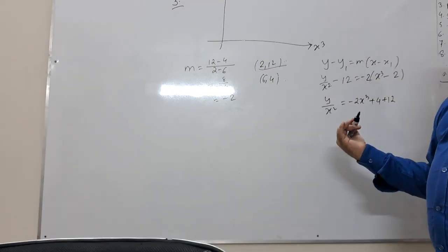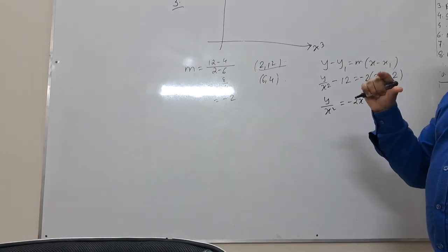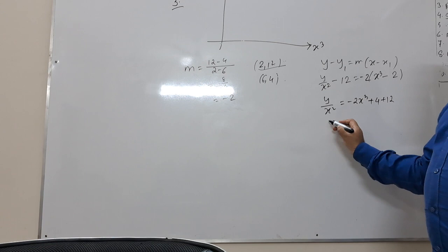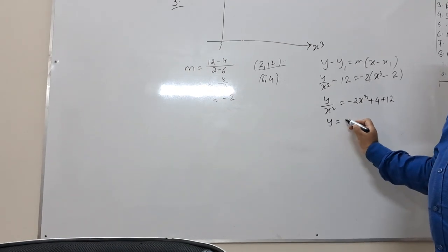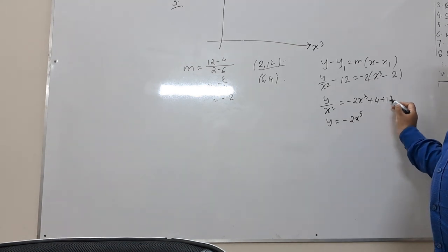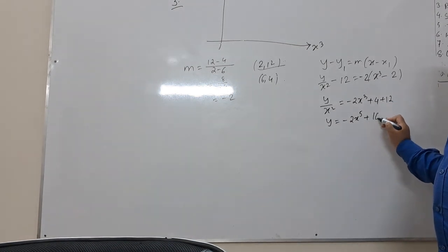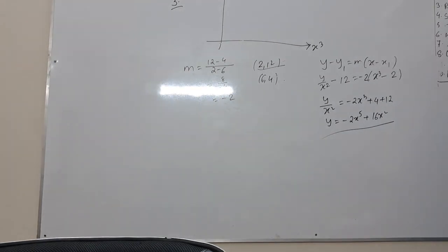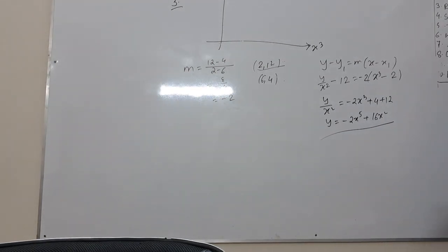Next we would express y in terms of x. So y equals to minus 2 x cubed into x squared, equals 4 plus 2, 16. x squared in terms of x.